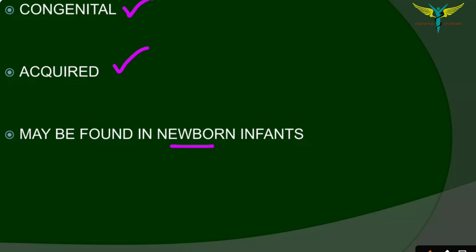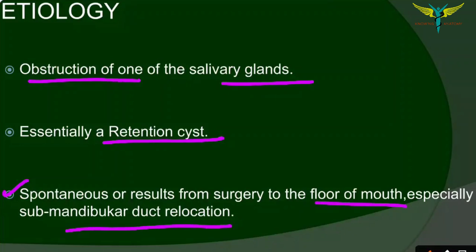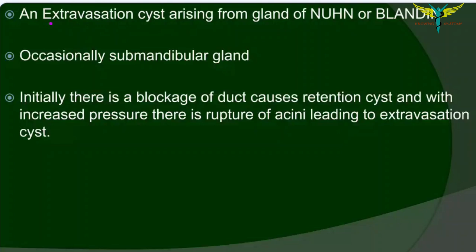Ranulas can be congenital, acquired, or found in newborn infants. The main etiology is obstruction of one of the salivary glands, making ranula essentially a retention cyst. It can also result from surgery to the floor of the mouth, especially during submandibular duct relocation, or from extravasation cysts arising from the gland of Blandin-Nuhn, or occasionally from the submandibular gland. Initially, blockage of a duct causes a retention cyst, and with increased pressure it leads to rupture of acini, further leading to an extravasation cyst.